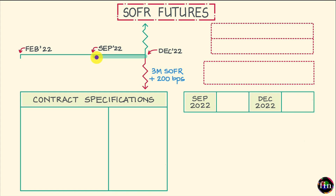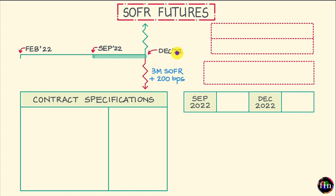That's the third Wednesday of September 2022, and it finishes three months hence on 21st December 2022 — that's the third Wednesday of December 2022.